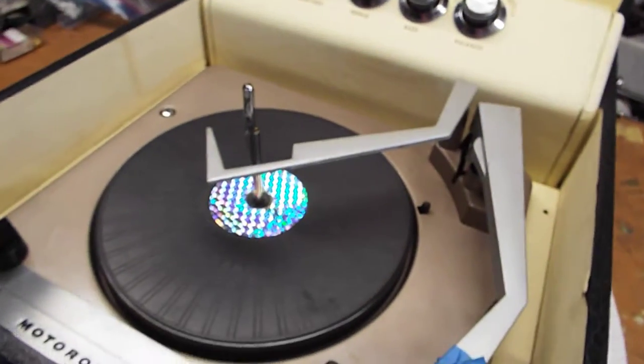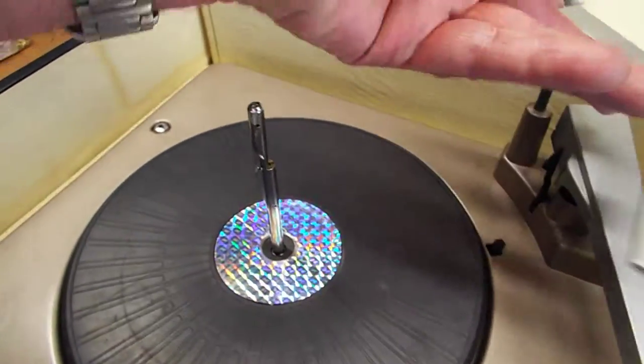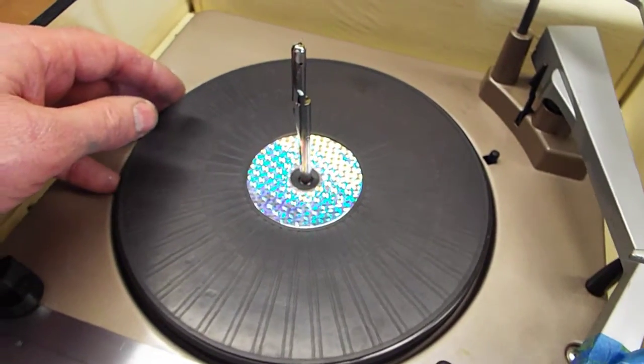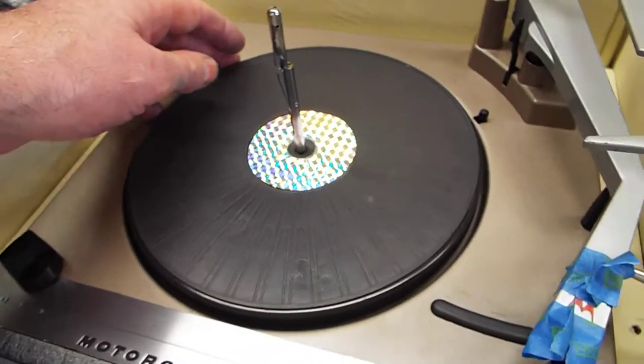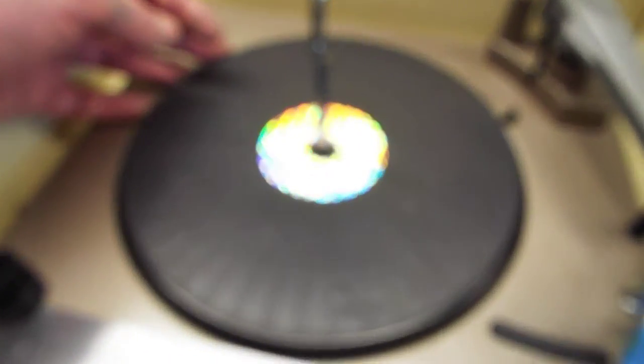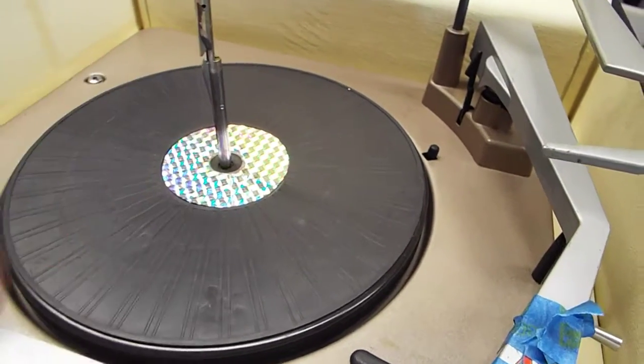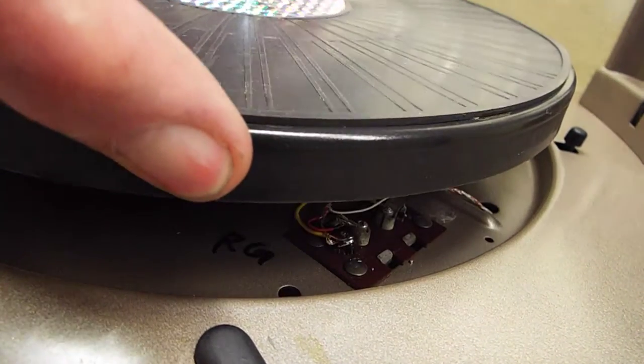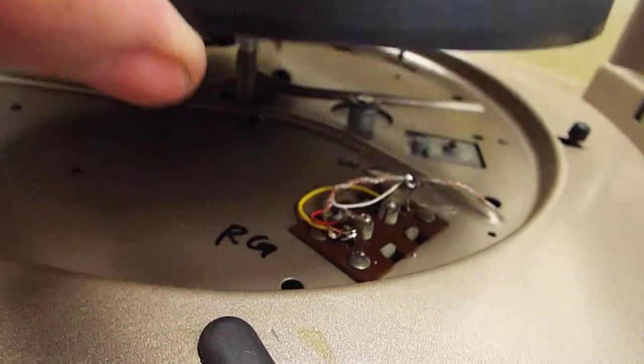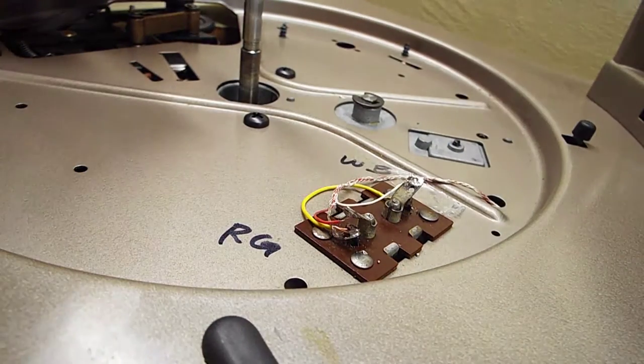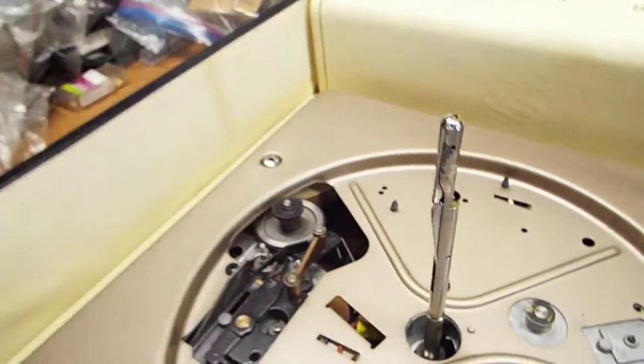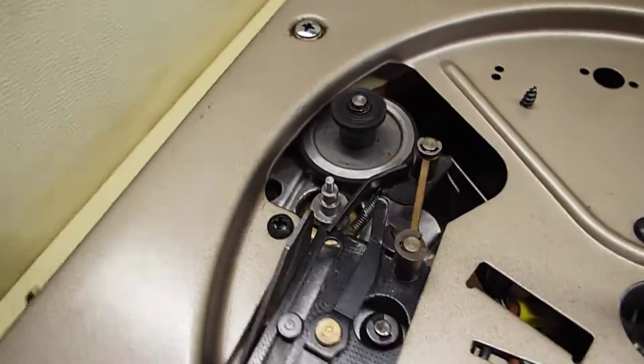First thing we need to do is let's take off the platter since we have to replace the tension spring anyway. To remove the spindle, you want to take off the C-clip, which I've already done. Then we're going to just lift the platter off of the spindle. Make sure that the little washer doesn't come off. It stays down there where it belongs. This is what it looks like.